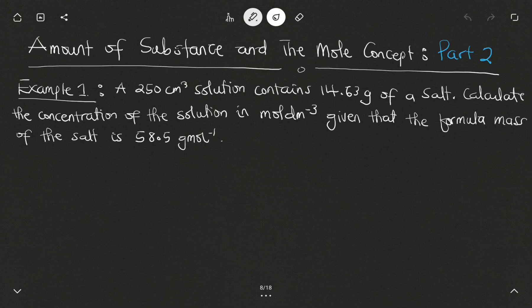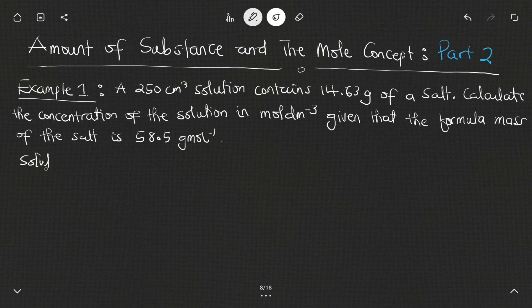Hello, in this video we want to look at amount of substance and the mole concept, part 2. Example number one: a 250 cm³ solution contains 14.63 grams of salt. We are to calculate the concentration of the solution in mol per dm³, given that the formula mass of the salt is 58.5 gram per mol.